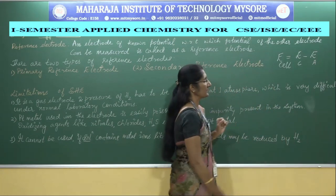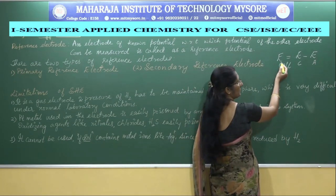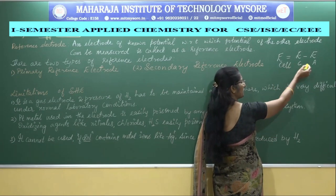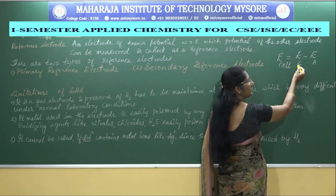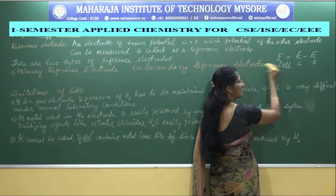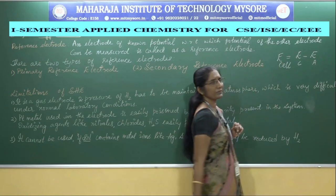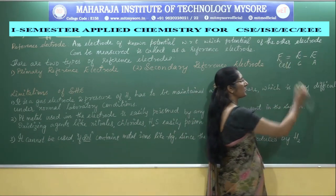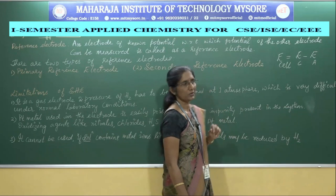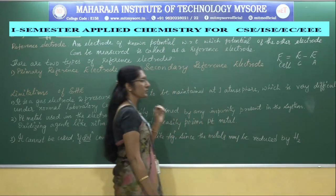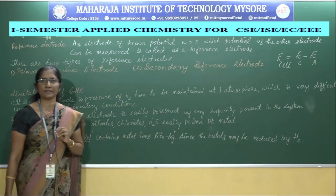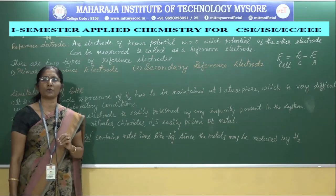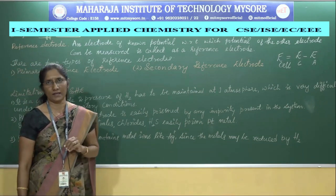By using this equation, we can easily calculate — by knowing the potential of any one electrode as well as the EMF of the cell — the potential of any single electrode. So, to measure the potential of any single electrode, we must know the potential values of the other electrode.